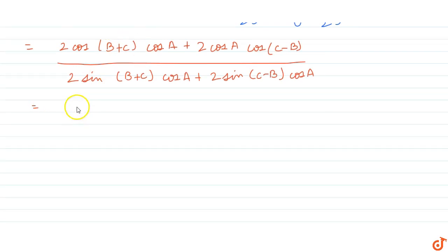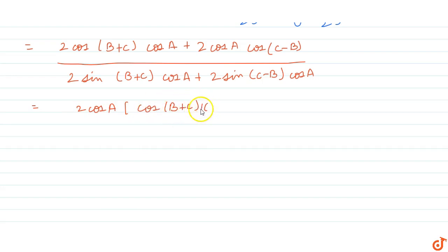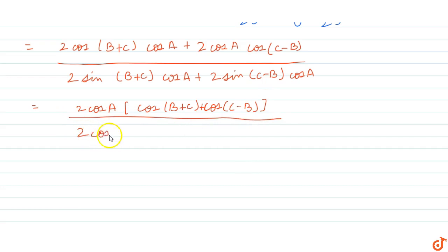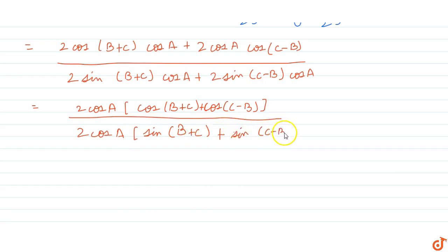Now we see that in the numerator and denominator, 2cos(A) is common. Taking out 2cos(A) from the numerator, we get cos(B+C) + cos(C−B), and in the denominator we get 2cos(A) multiplied by sin(B+C) + sin(C−B).